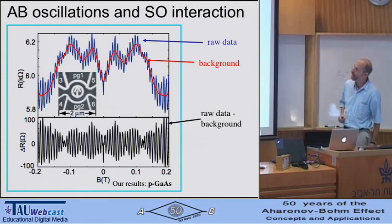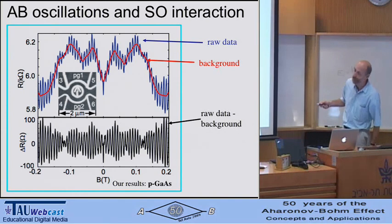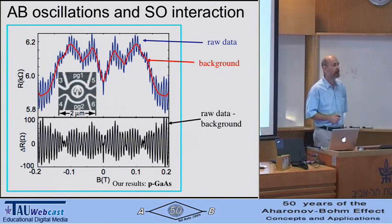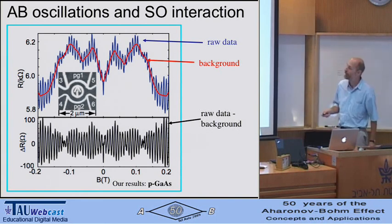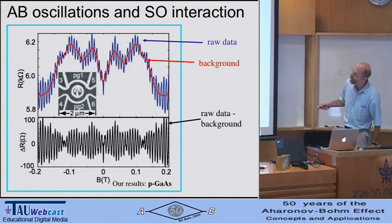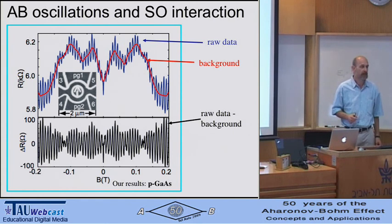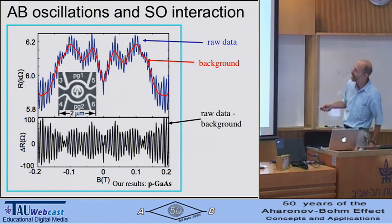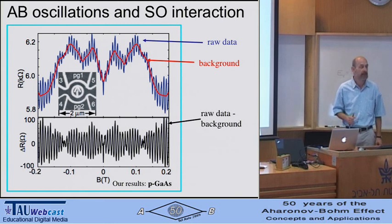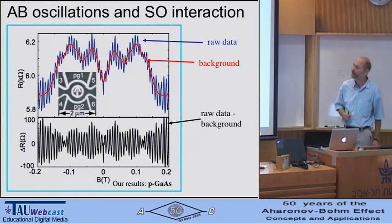You see highly reproducible Aharonov-Bohm oscillations. The pattern is even as a function of magnetic field, which is because of time-reversal invariance. You also see beating patterns—it's not just one Aharonov-Bohm signal, but you can really see by eye that there's a beating pattern in these oscillations.